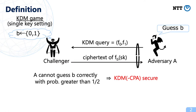This is the definition of KDM security. It is defined by using a security experiment between the challenger and an adversary. In this experiment, the adversary can make a KDM query consisting of two functions F0 and F1. For this query, the challenger returns a ciphertext of F_B of SK, depending on the value of the challenge bit B. If any polynomial-time adversary cannot guess the challenge bit B correctly significantly better than random guessing, we say that an encryption scheme is KDM secure.